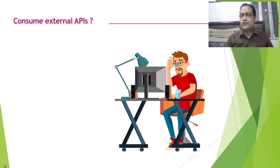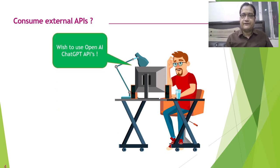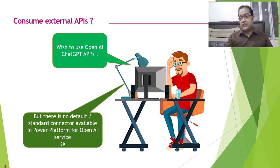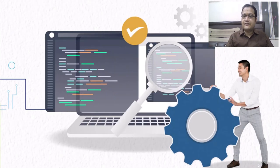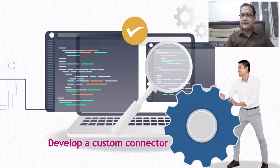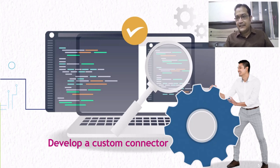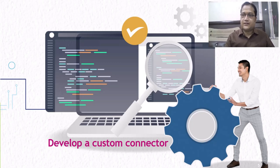The problem is that if you have to consume an external API — for example, OpenAI or ChatGPT APIs — there is no default or standard connector available in the Power Platform for that service. The solution is that you have to develop a custom connector. If you want to consume an external service via a REST API endpoint, you have to create a custom connector to connect to that system.